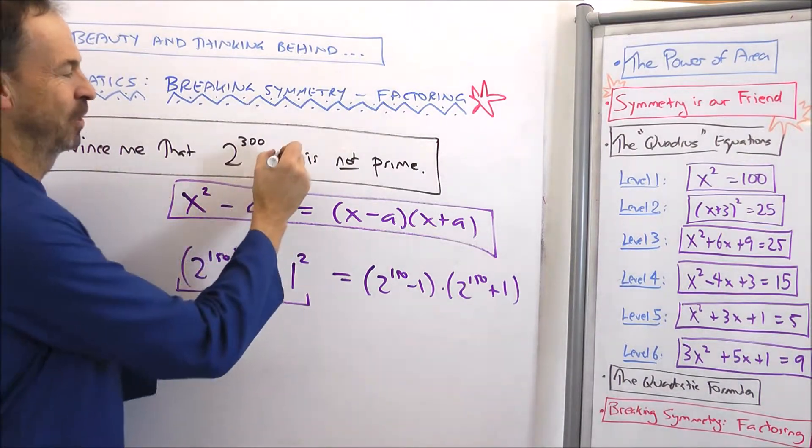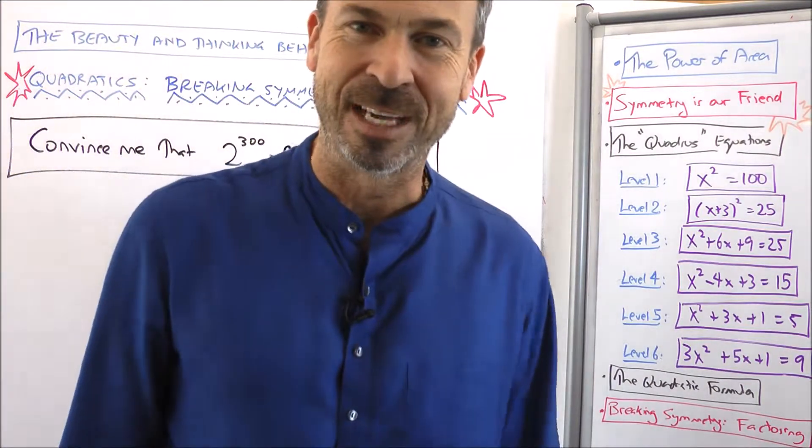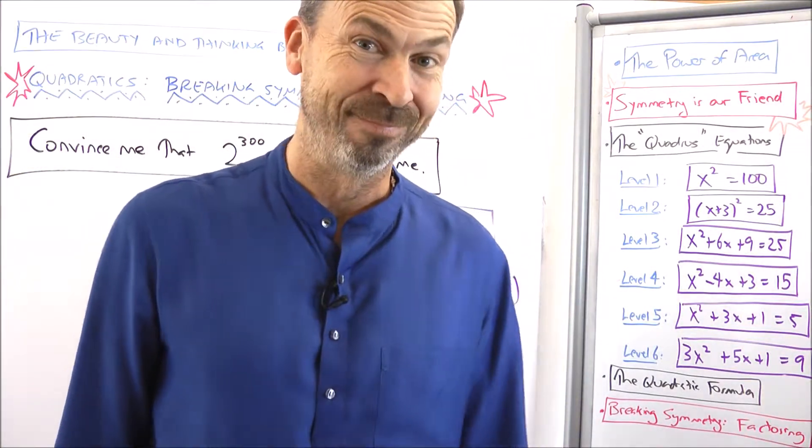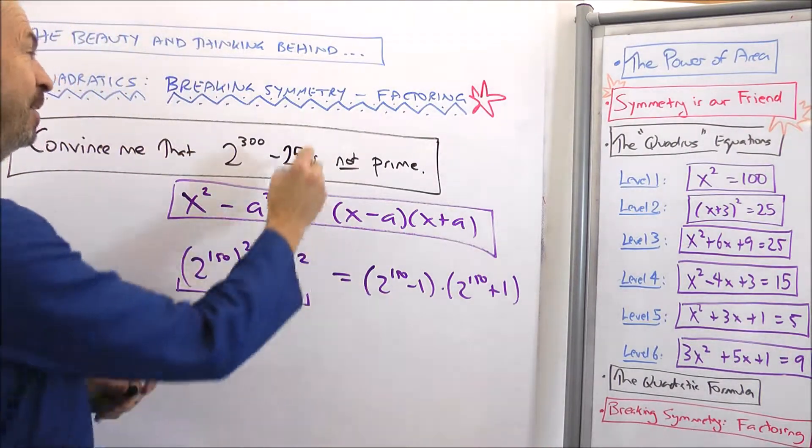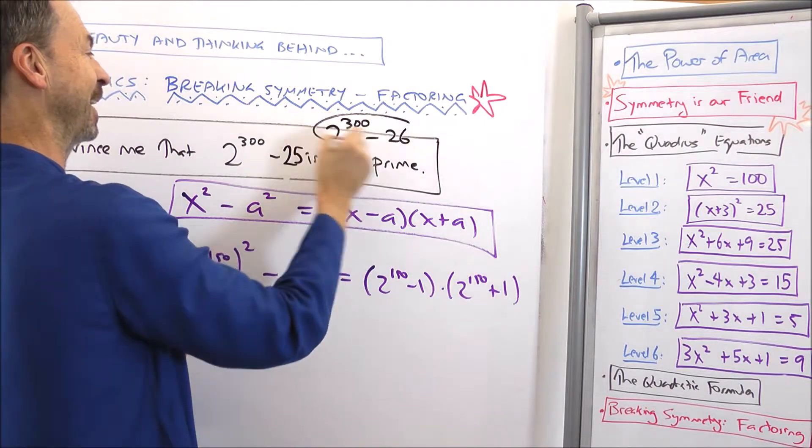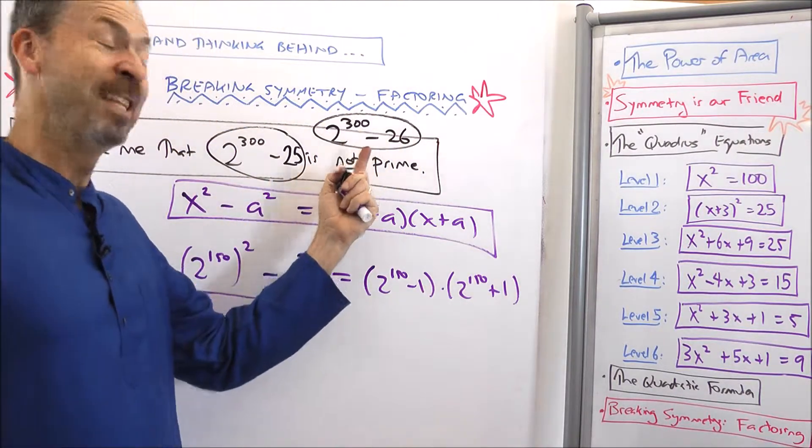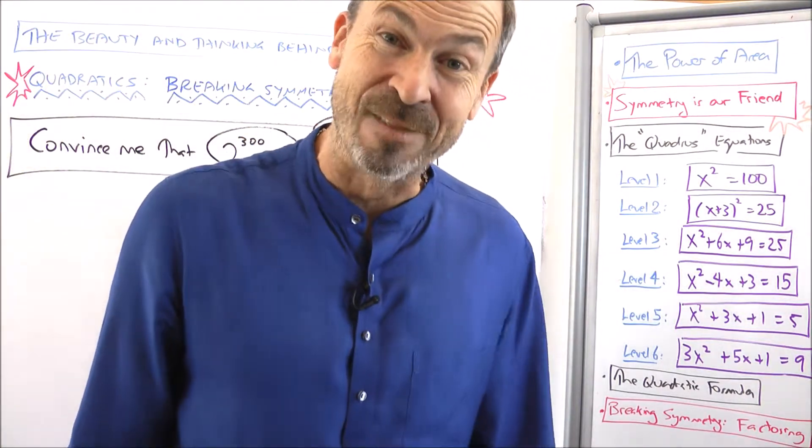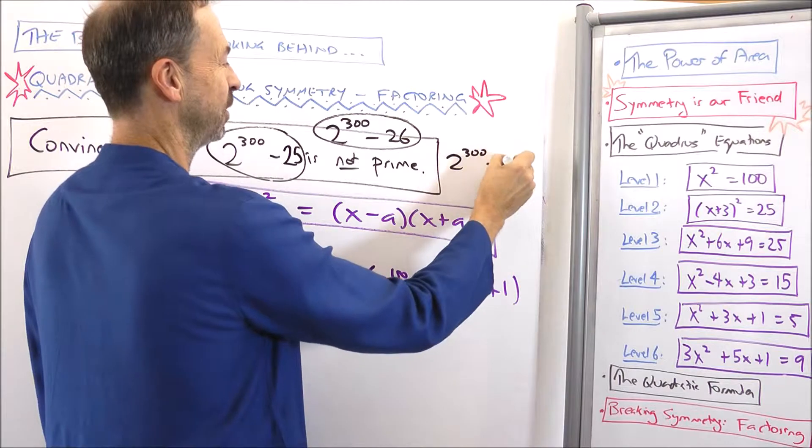Convince me that 2^300 - 25 is not prime. I bet you use the difference of two squares. Convince me it's not prime. And then when you've done that one, also convince me that 2^300 - 26 is not prime. So convince me that's not prime. And if you want a real challenge, 2^300 - 27.